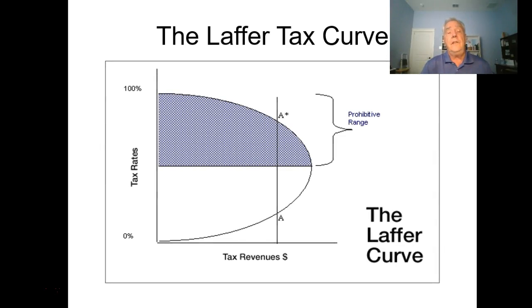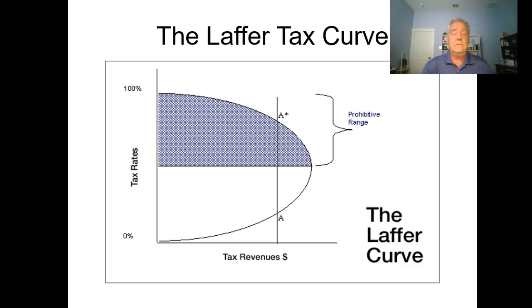Here's what the Laffer curve looks like graphically. All Laffer is saying is that if your tax rate is above 50%—in the 'prohibitive range' at point A-star—your tax revenues will be less cash received by the government than at point A. The idea was to reduce the tax from A-star down to A, with the net effect of reducing the tax and increasing the cash flowing into the government.